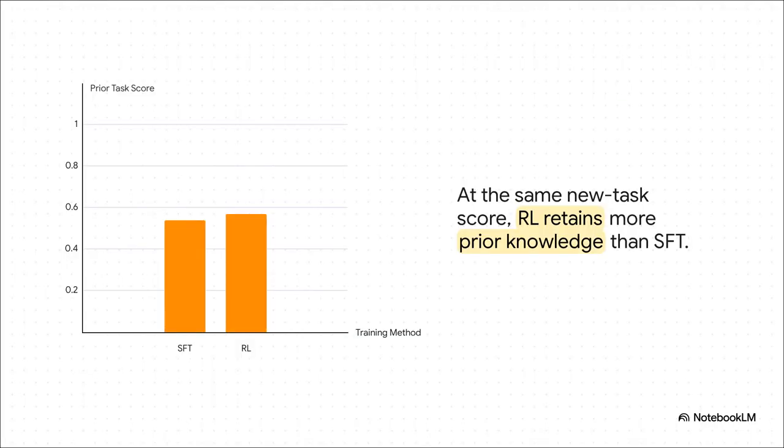And this is where we see the first piece of hard evidence. The researchers ran the experiments, and the results were pretty shocking. When they got both the SFT and RL models to a high score on a new math task, the difference in what they remembered was just stark. You can see it right here in this chart. This shows how well they still perform on the old stuff. And it's clear, RL consistently holds on to way more of its prior knowledge. SFT, on the other hand, seems to just throw it away to make room for the new skill.